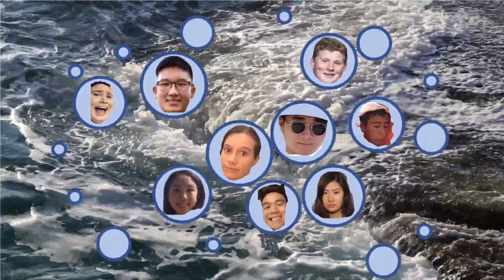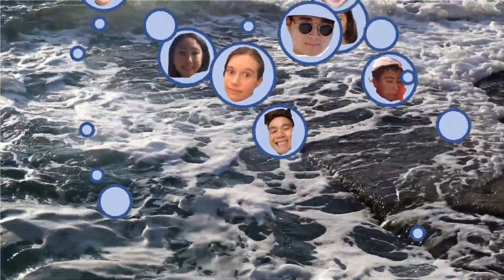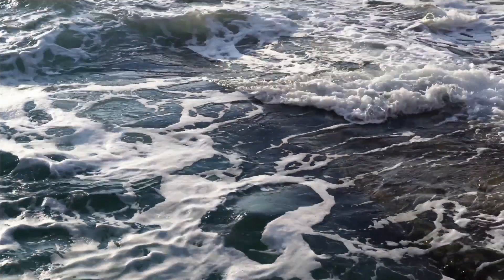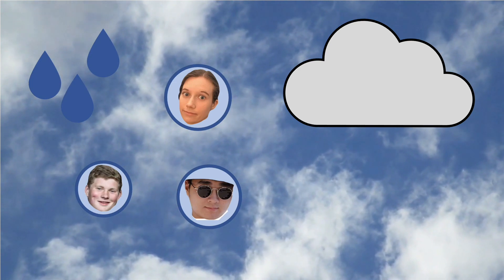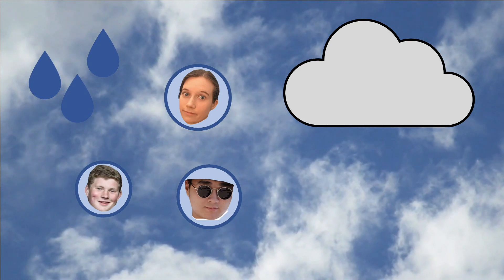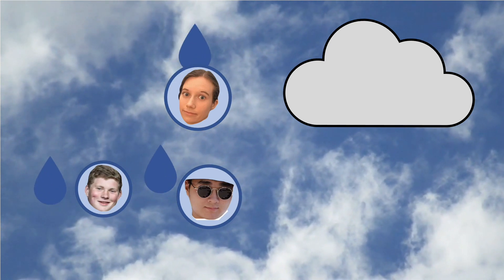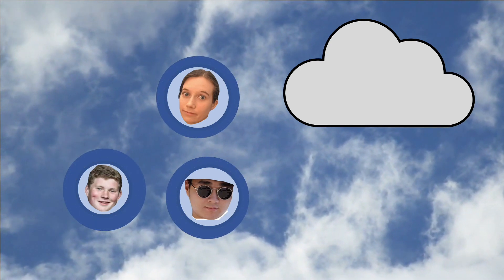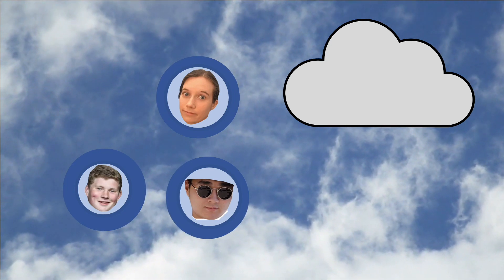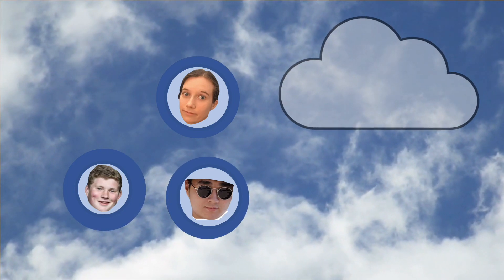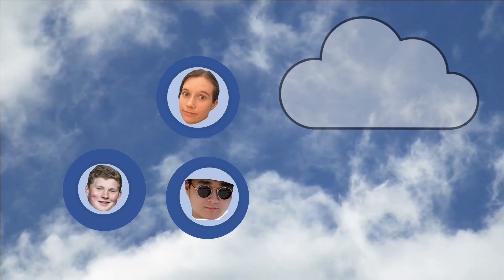Soon, the aerosols travel further up into the atmosphere. Some of these aerosols will become cloud condensation nuclei, which are critical in the formation of clouds. They provide a surface for the condensation of water vapor into droplets and are known as cloud seeds. The size of cloud droplets formed by these cloud condensation nuclei plays an important role in the brightness of clouds, which in turn impacts the Earth's radiation budget and climate change.